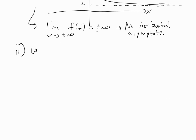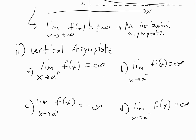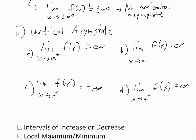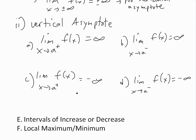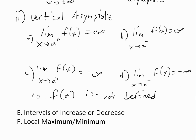The other kind is a vertical asymptote, which arises from one of four cases: if the limit as x approaches a from the right equals infinity, or from the left equals infinity, or from the right equals negative infinity, or from the left equals negative infinity. For rational functions, you can usually find a vertical asymptote by looking at when the denominator is zero. It's important to know which of these cases applies, and you should apply this limit whenever f of a is not defined.